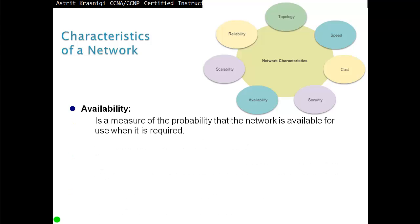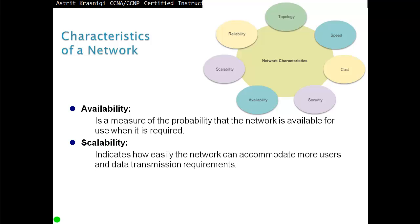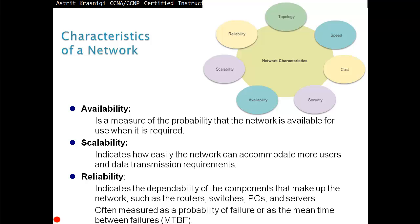Availability is a measure of the probability that the network is available for use when required. Then we look at scalability, which indicates how easily the network can accommodate more users and data transmission requirements, as well as reliability. Reliability indicates the dependability of components such as routers, switches, PCs, and servers. This is often measured as a probability of failure or as the mean time between failures, MTBF.